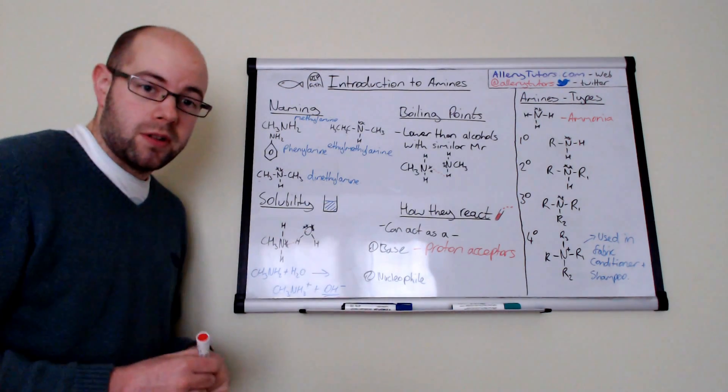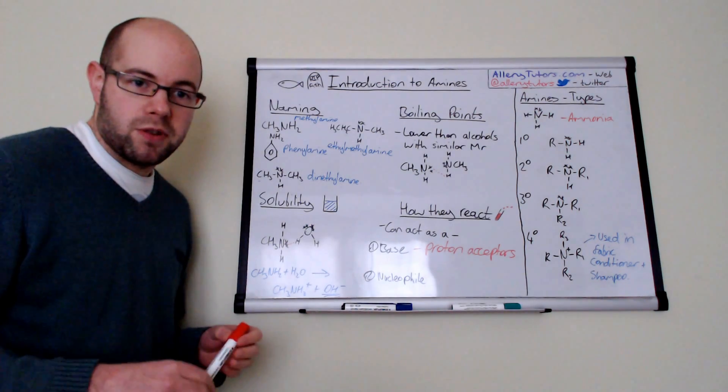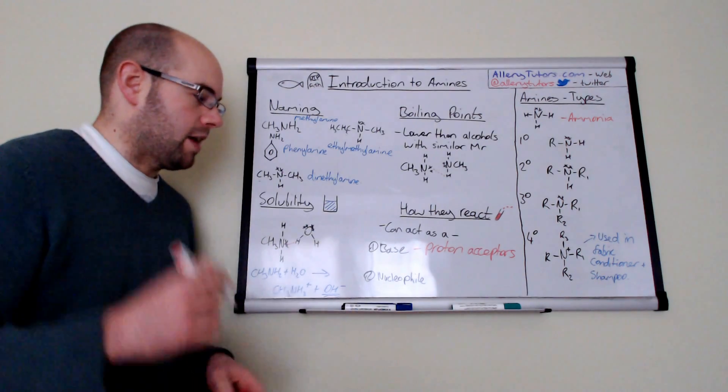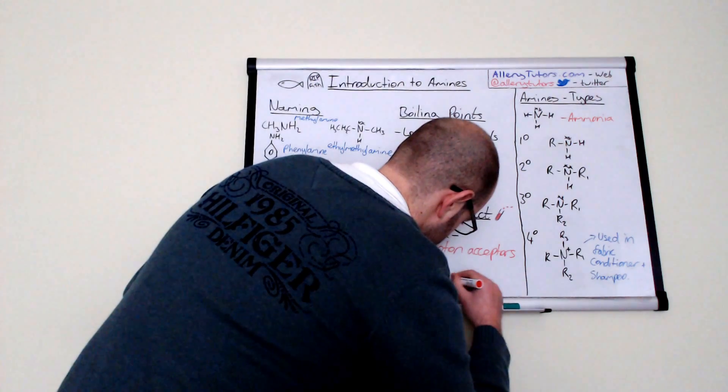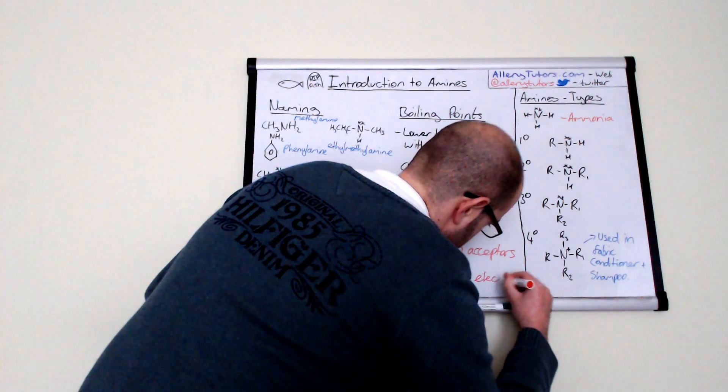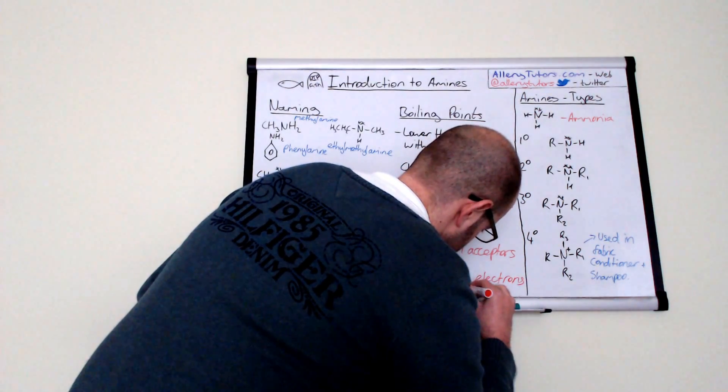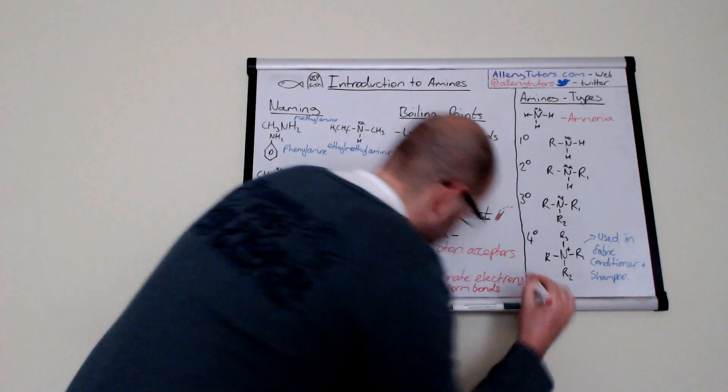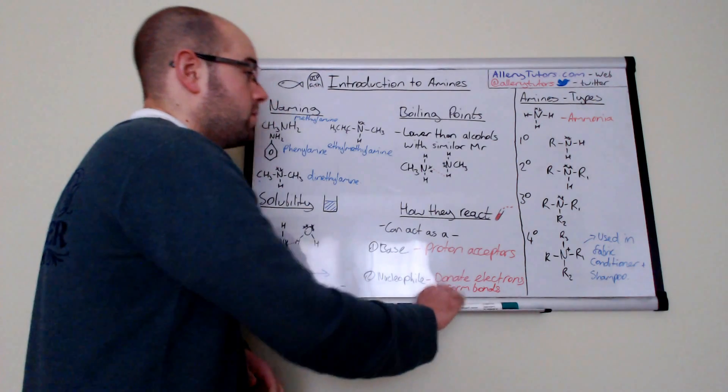They can also act as nucleophiles as well. And a nucleophile are nucleus loving groups. And what they can do is they can donate their lone pair of electrons and interact that way. So they donate electrons to form bonds. And that's effectively what a nucleophile will do. So they can behave in different ways. So they are incredibly versatile things.